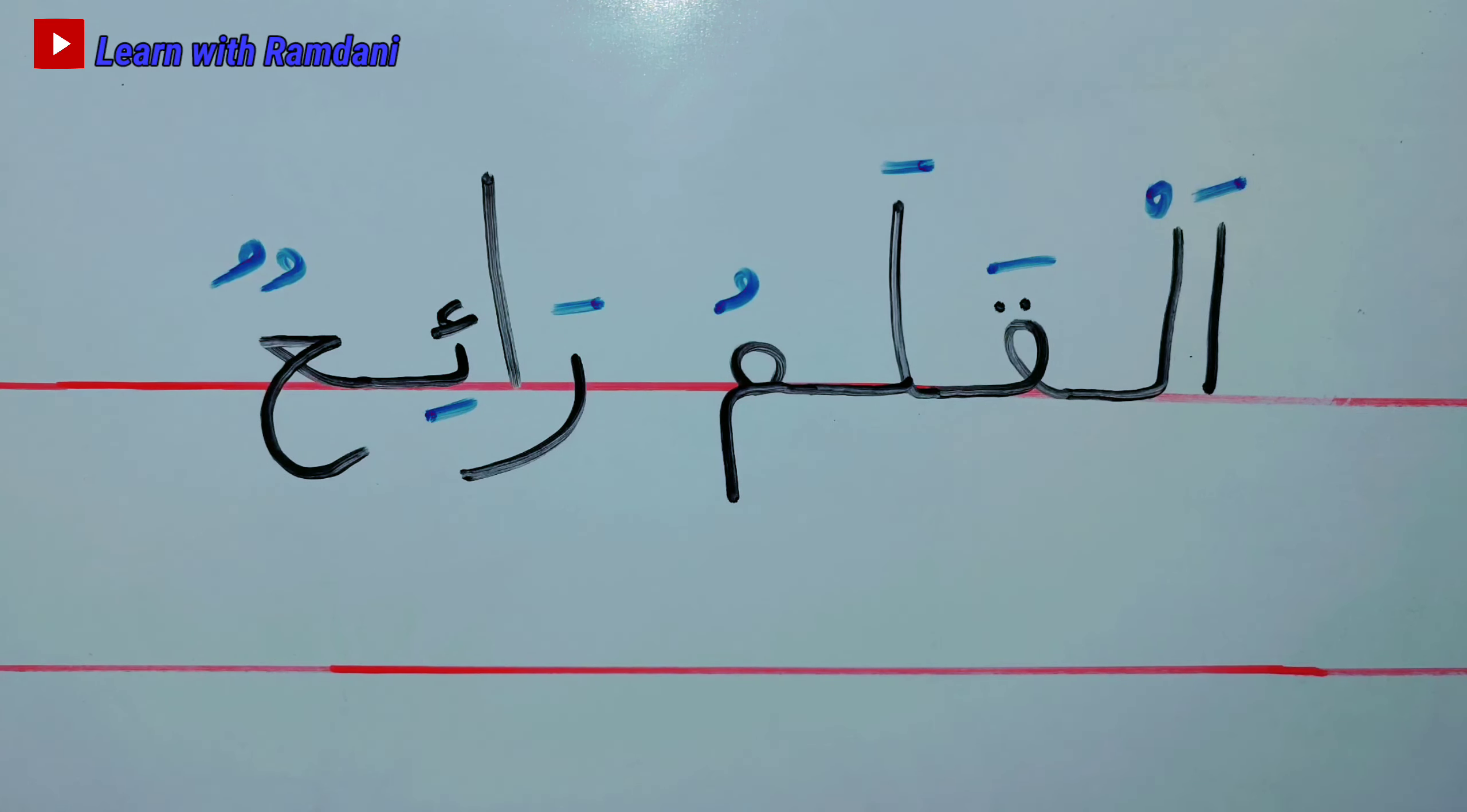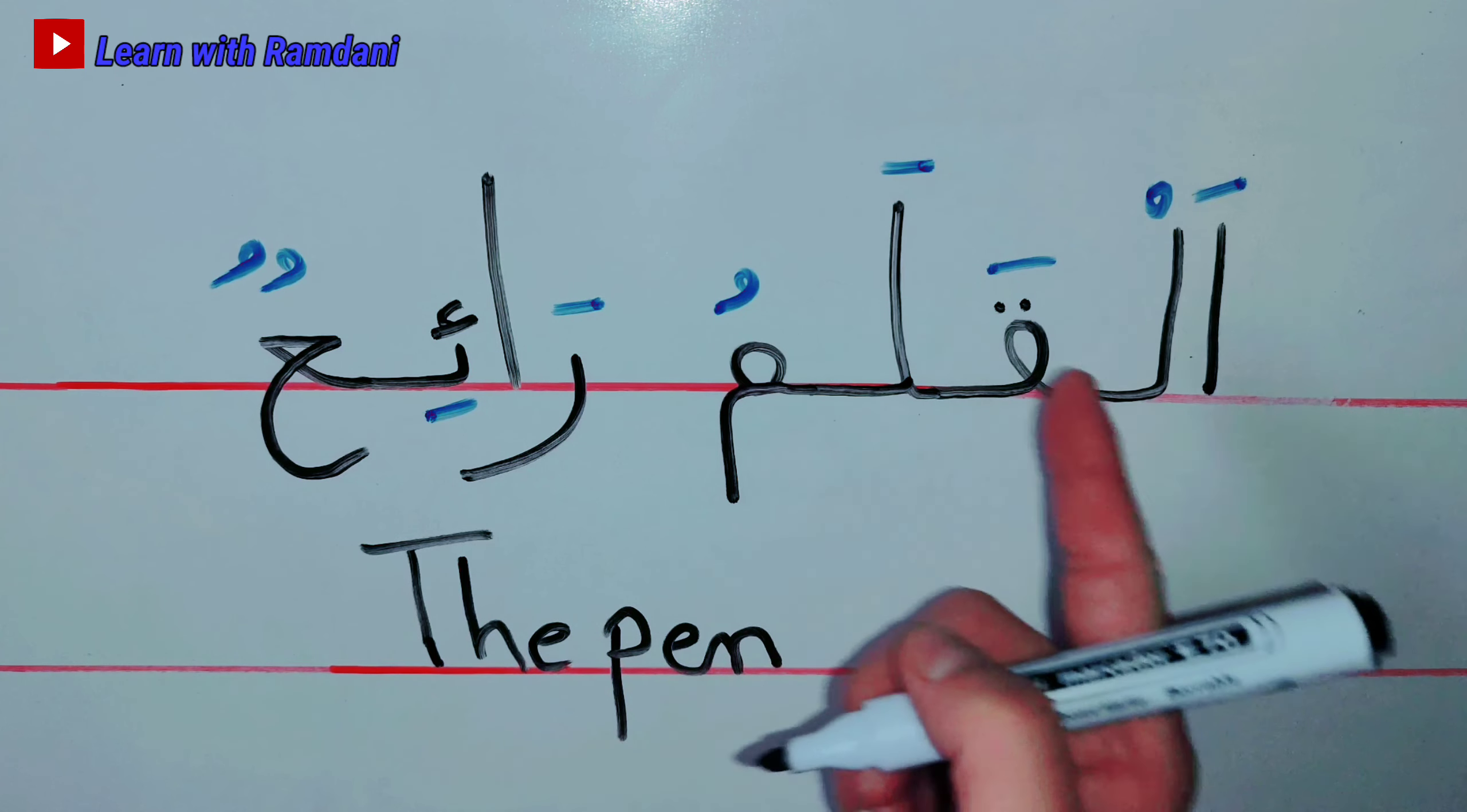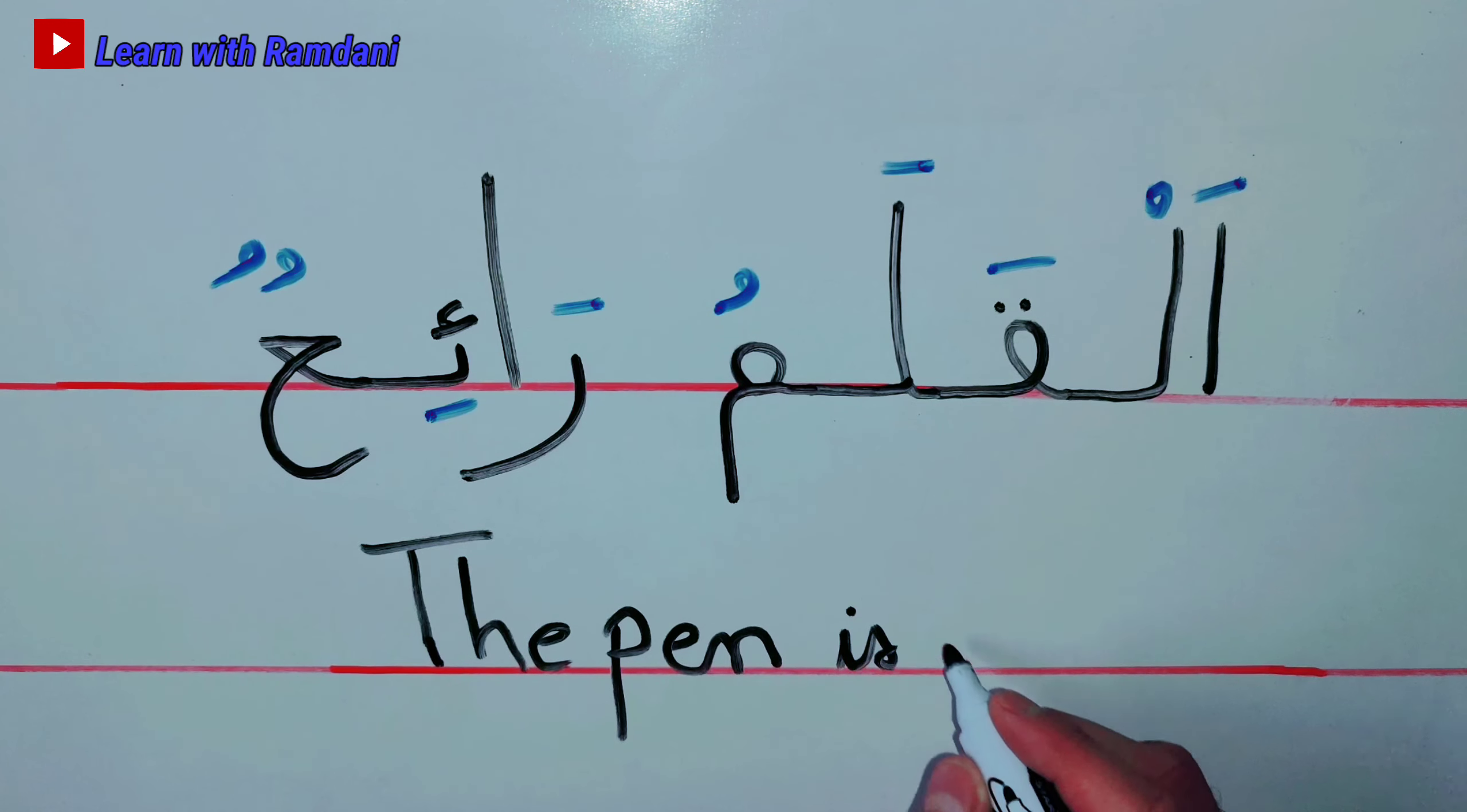And this is meaning in English: Al-Qalamu, which is the pen. Okay, so the pen, it's alqalam, and rai'un is wonderful.